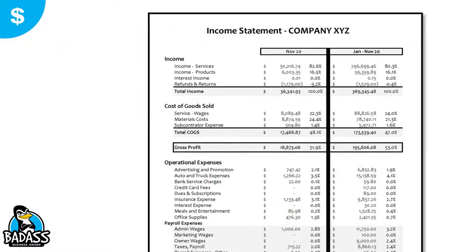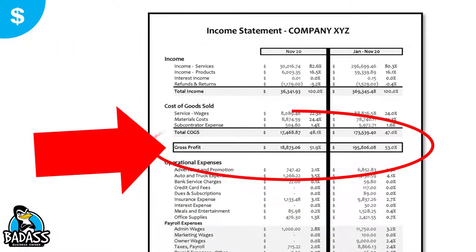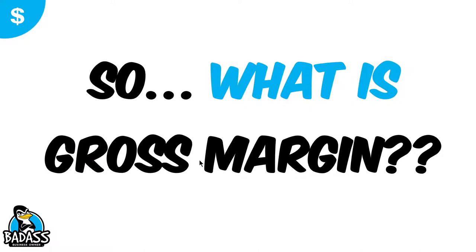Now, if you're looking at your profit and loss statement, there actually is a line on here for your gross profit. You'll see that it has the income minus the cost of goods — that's where they come up with the gross profit. You're probably going, okay, then what's the difference between gross profit and gross margin?